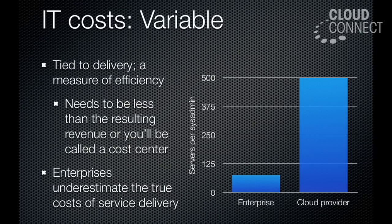And then there are the variable costs, and this is really where clouds take off. The variable cost of a cloud-based system is different from the internal costs because cloud providers can find much greater efficiencies in how they operate things. So a unit of computing from a cloud provider actually costs much less for the cloud provider than a unit of computing for an internal enterprise.